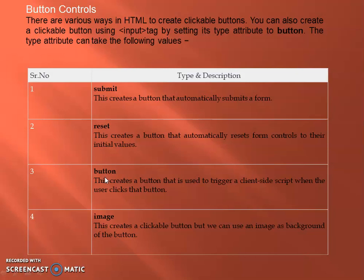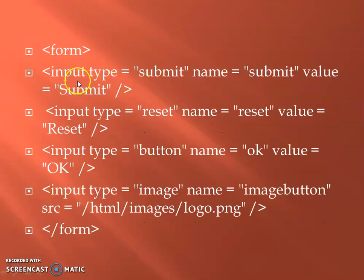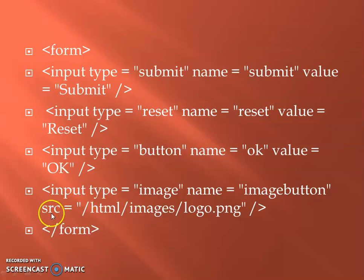If you want to create a button, you will use the button. There will be another use: the image button. As you click on image, you will perform actions. If you want to use the image buttons, you can use the image buttons. You can also use the syntax of the input type — click Submit and Reset. You can use SRC for the image button. You can use the image button with name attribute.